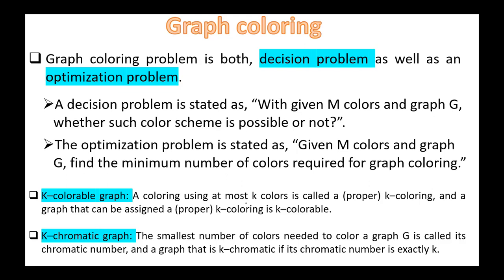A coloring using at most K colors is called a proper K coloring, and a graph that can be assigned a proper K coloring is K-colorable. The smallest number of colors needed to color a graph G is called the chromatic number, and a graph is K-chromatic if its chromatic number is exactly K.